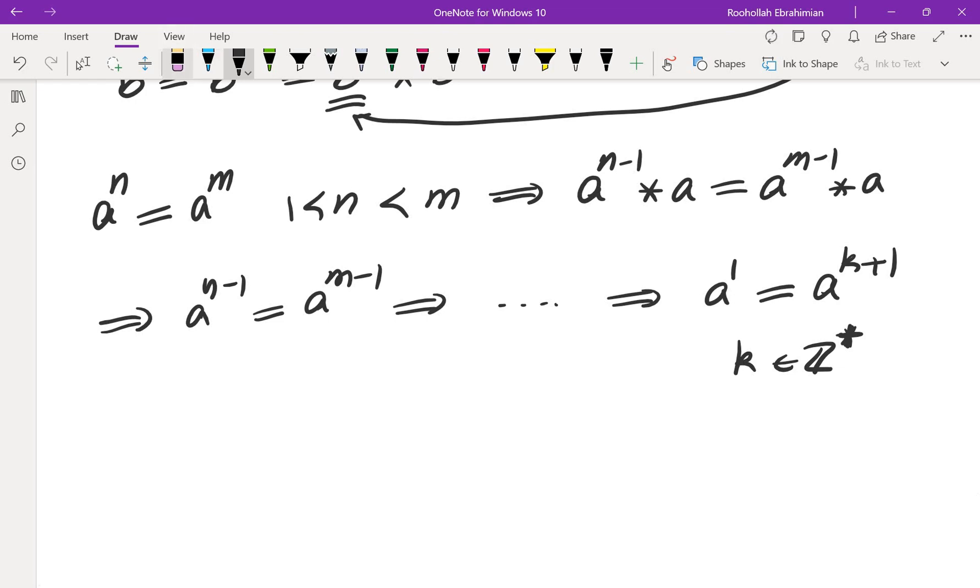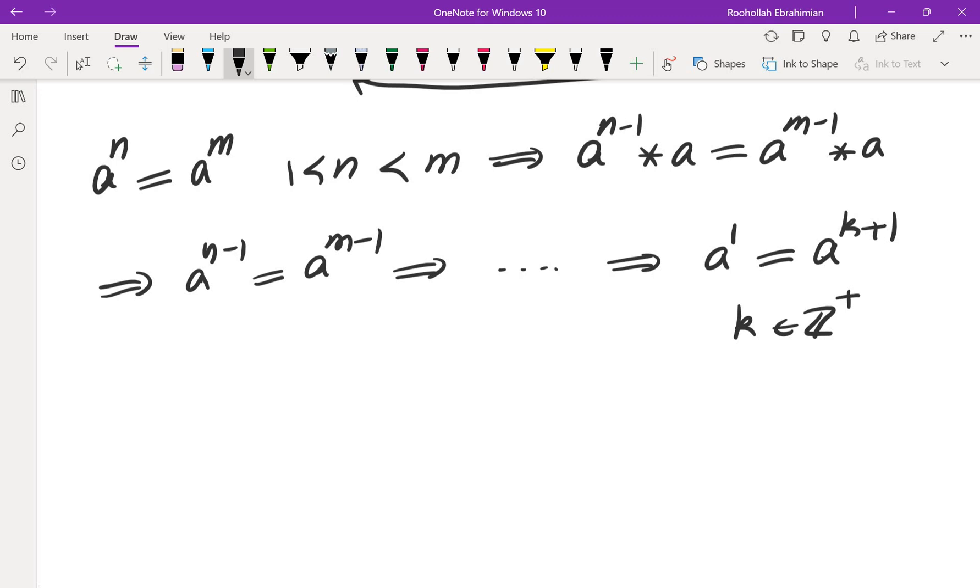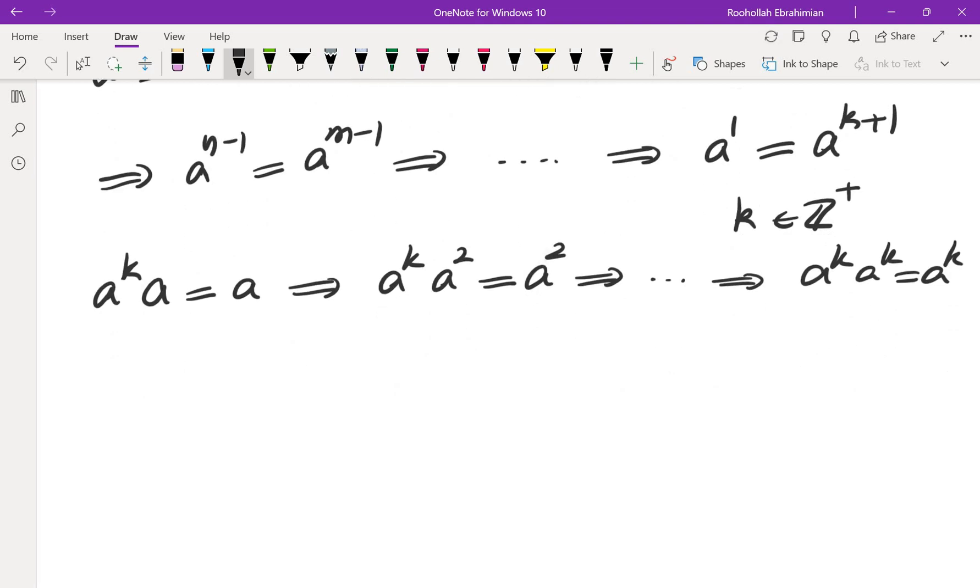Now, I was hoping that I can show that this a to the power of k is in fact the identity of this set. And in fact, I was able to show that this a to the power of k is the identity. So one property of this a to the power of k is that if I look at a to the power of k times a, I know that's a. If I look at a to the power of k times a squared, that would give me a squared. If I repeat that, a to the power of k times a to the power of k is a to the power of k. So that's a good property of this element. So that means if I call this one e, this satisfies e squared equals e, which is, of course, a property of identity of every group.